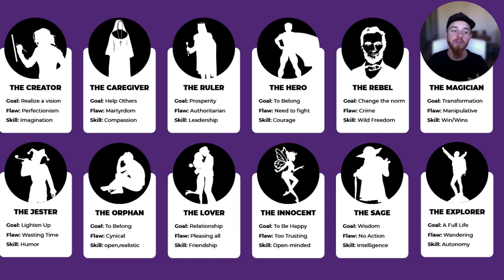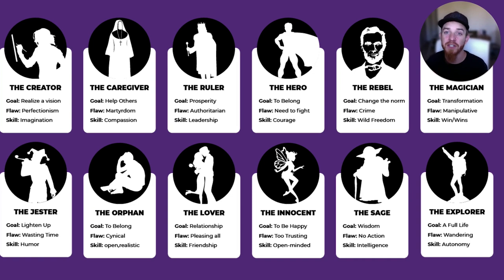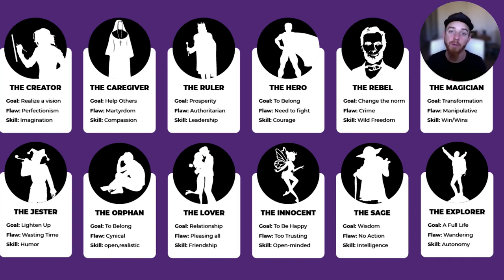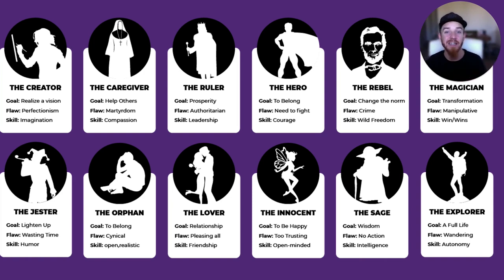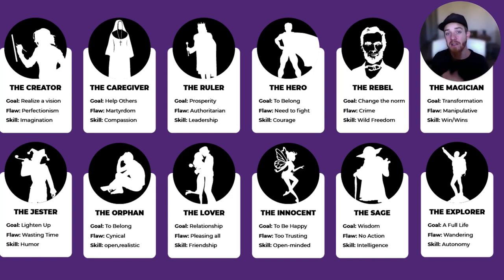My primary archetype is the creator. The goal of a creator is to realize a vision. My wife's business, Crunchy Cottage, came to life because she and I saw this vision and I helped her bring the brand to life. My flaw is perfectionism — I tend to overthink and over-plan, wanting everything perfect before launch. I've worked on this for years, because progress is more important than perfection. My skill is imagination — the ideas I come up with are why clients come to me.